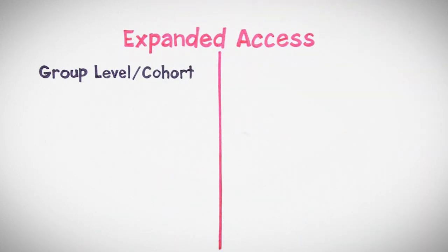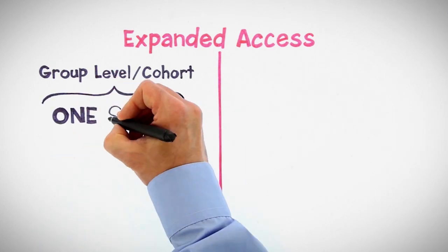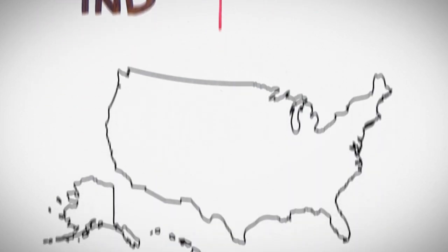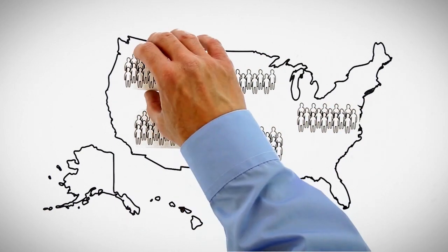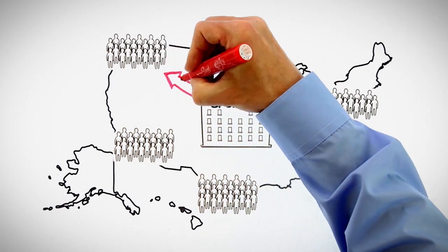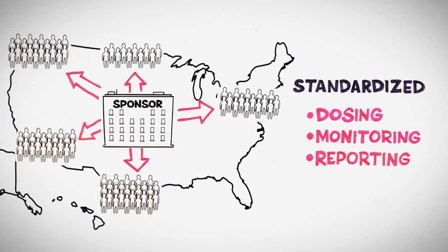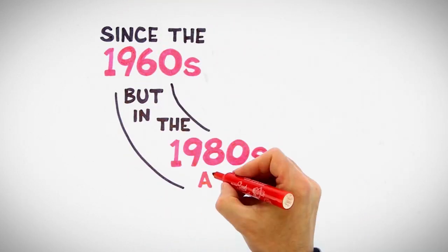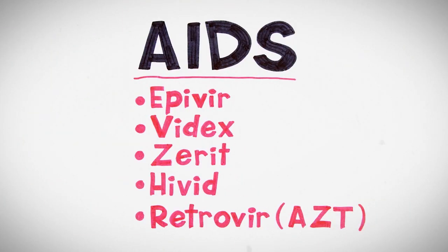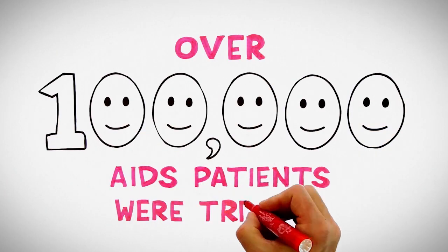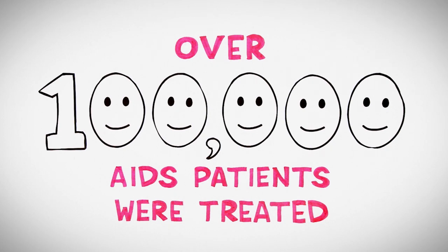Just like a research trial, a group-level expanded access trial has one single protocol submitted in one IND. It's generally a multi-site clinical trial because the patients are probably all over the country, centrally coordinated with standardized dosing, monitoring, and reporting. These kinds of trials have existed since the 1960s, but they really got visible in the 1980s and 90s during the AIDS crisis, when over 100,000 patients who could not get into research trials were treated with new antiretrovirals, including the first protease inhibitors, through expanded access trials.